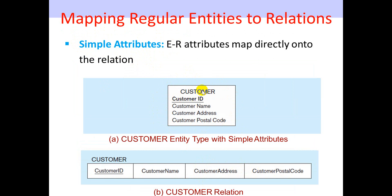We have the entity set and its attributes. To convert simple attributes to the relational model, we write each simple attribute as a column in the table. If you have a simple attribute, you will write it directly as a column.